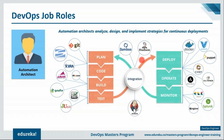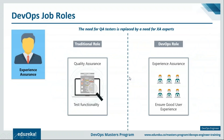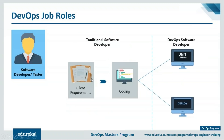The automation architect — sometimes called integration specialist — analyzes, designs, and implements strategies for continuous deployments while ensuring high availability on production and pre-production systems. The experience assurance role replaces traditional QA testers. These experts ensure that all new features and functions are released with the end user experience in mind, evolving beyond testing functionality to include user experience testing.